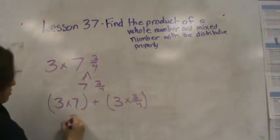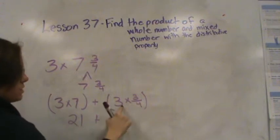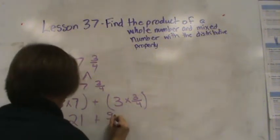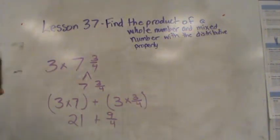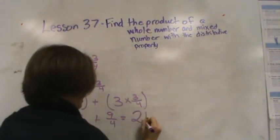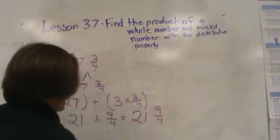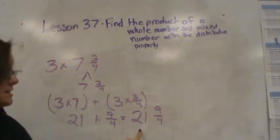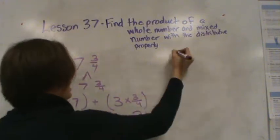3 times 7 is 21 plus 3 times 3 fourths. If I did 3 fourths 3 times, I'd have 3 fourths, 6 fourths, 9 fourths. Because I'm counting by 3 fourths. So I would get 21 and 9 fourths. Now 21 and 9 fourths, that's an improper fraction. So I need to change this so I get a bigger whole number.